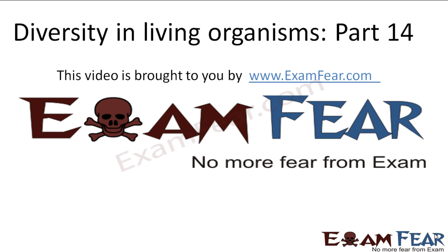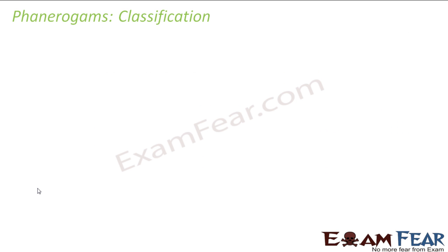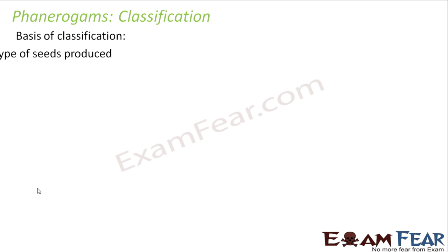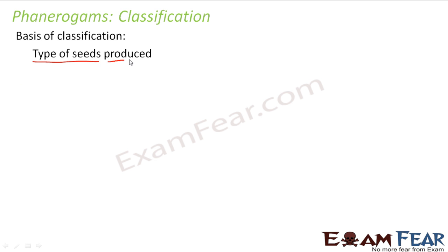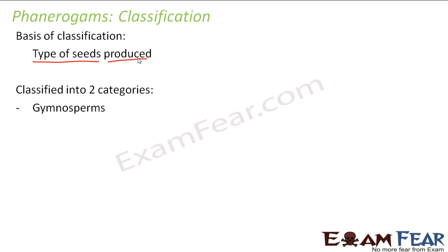This video on diversity in living organisms part 14 is brought to you by examfear.com. When plants have seeds, another sub-classification arises: seeds can either be naked or covered. Based on the type of seeds produced, phanerogams are classified into two categories: gymnosperms and angiosperms.